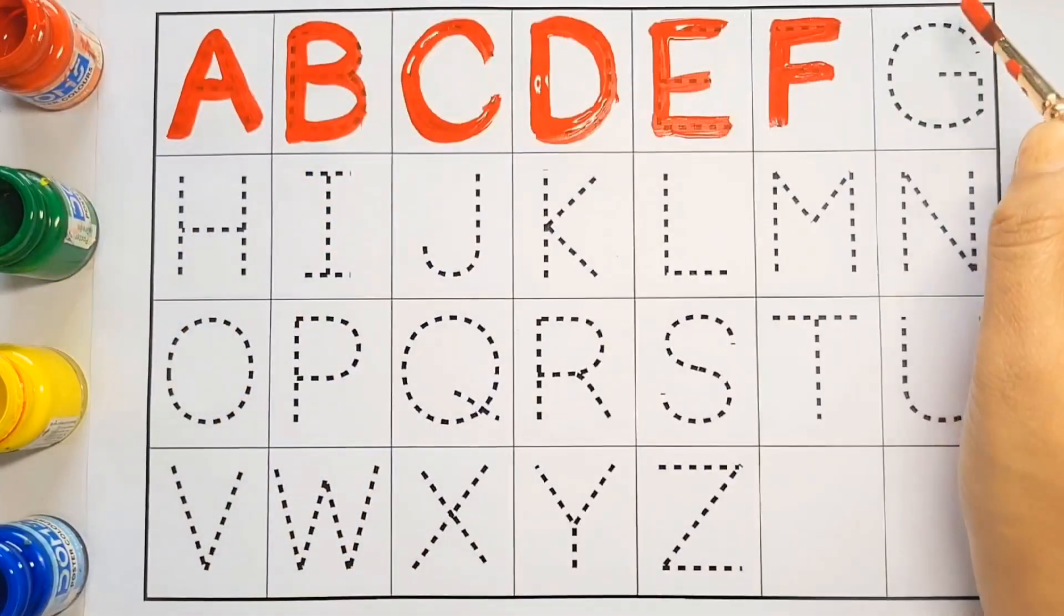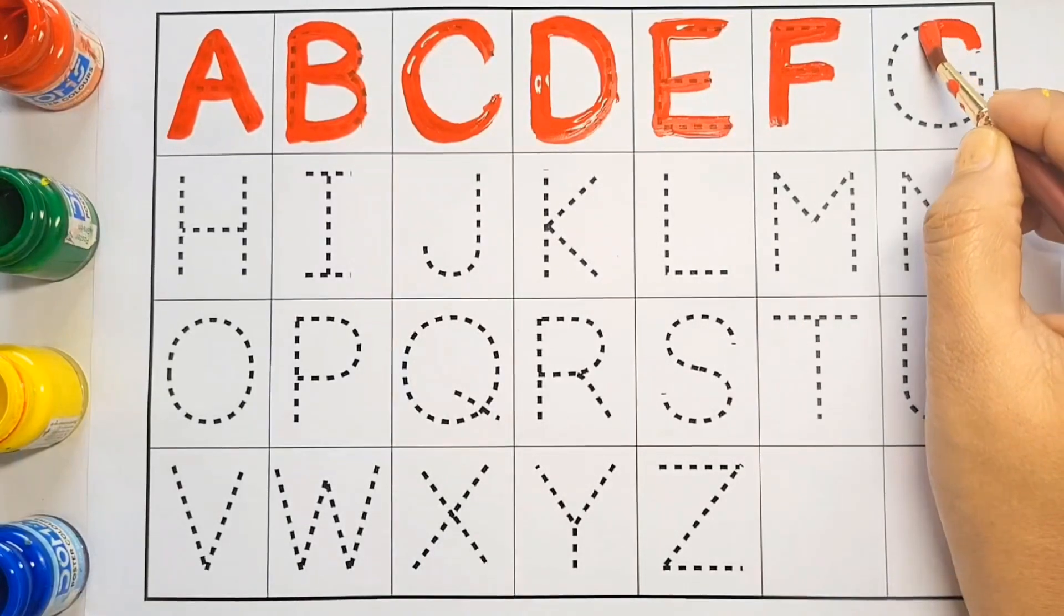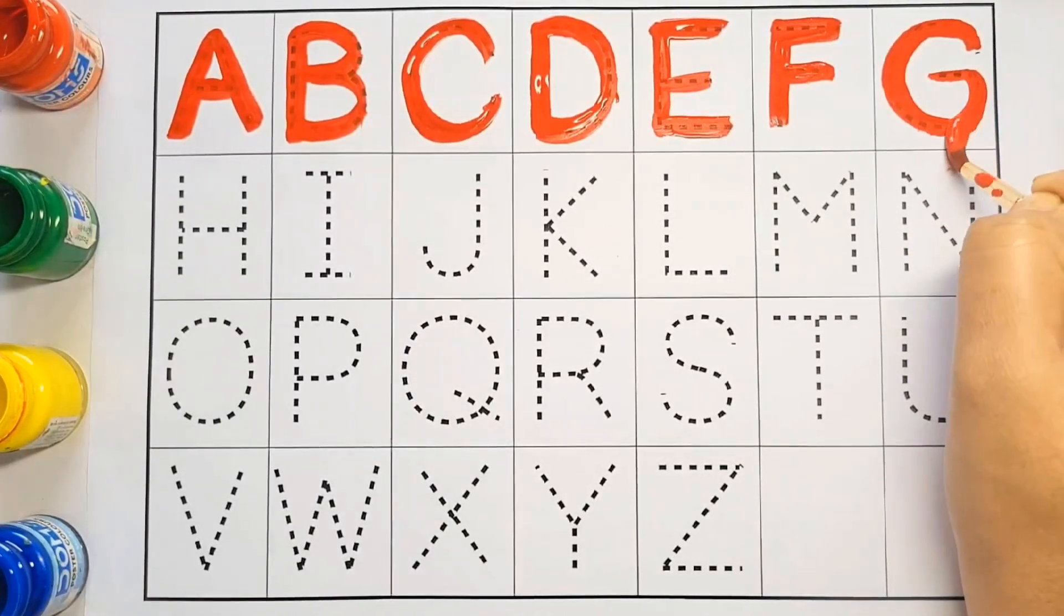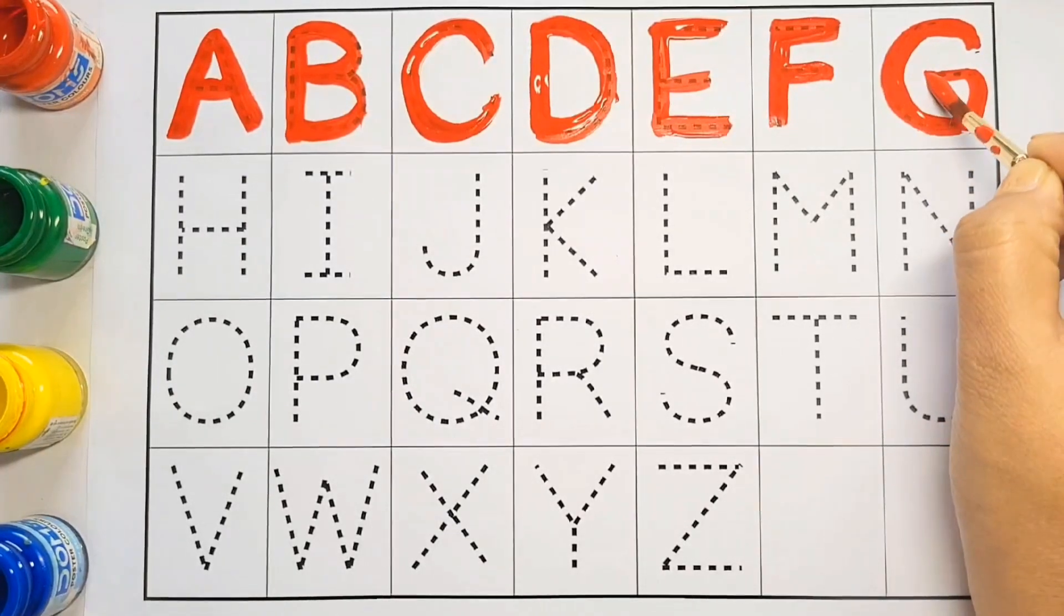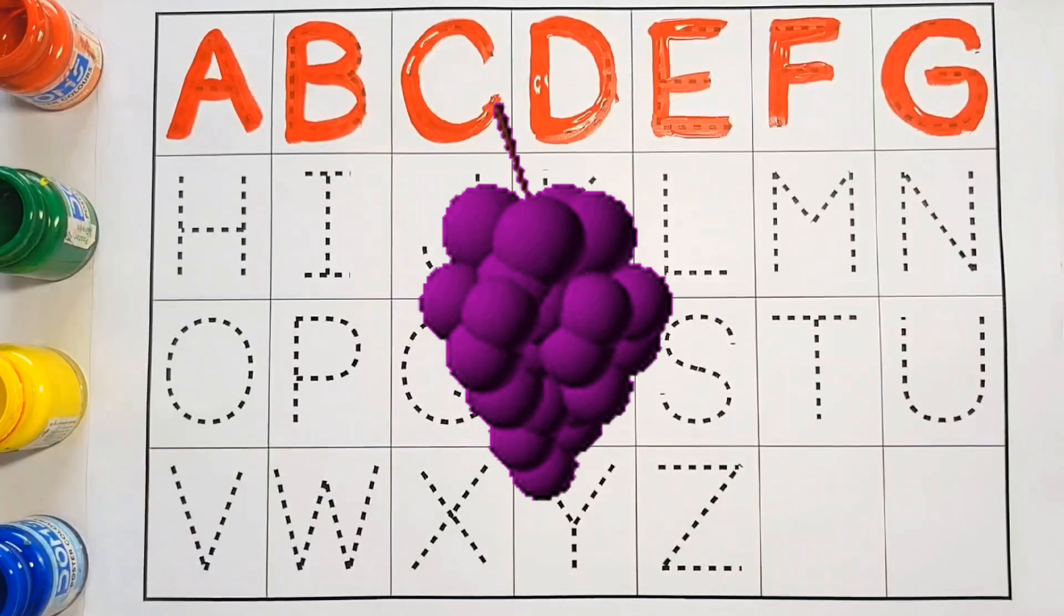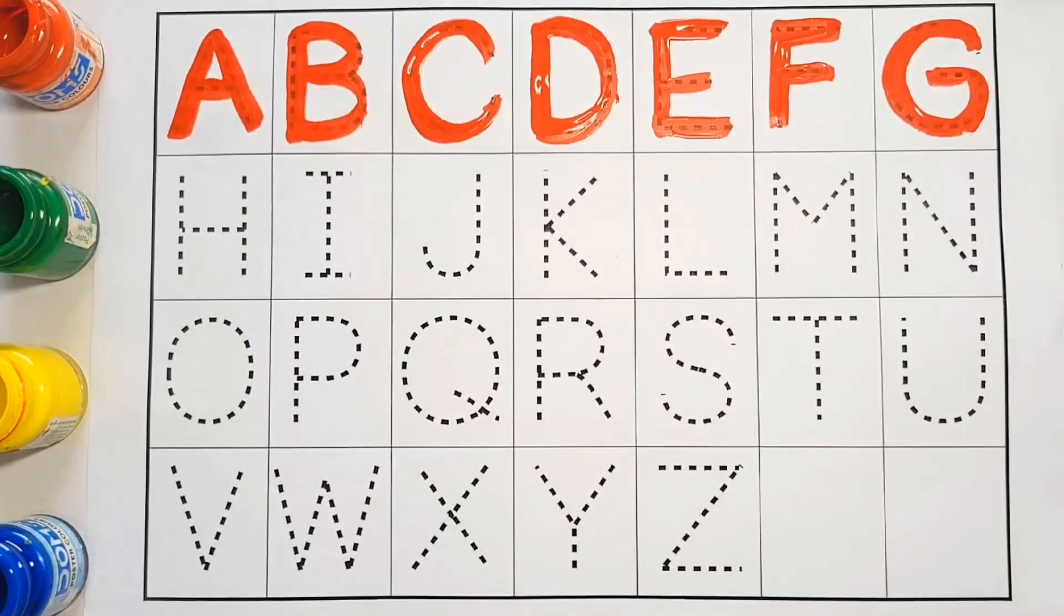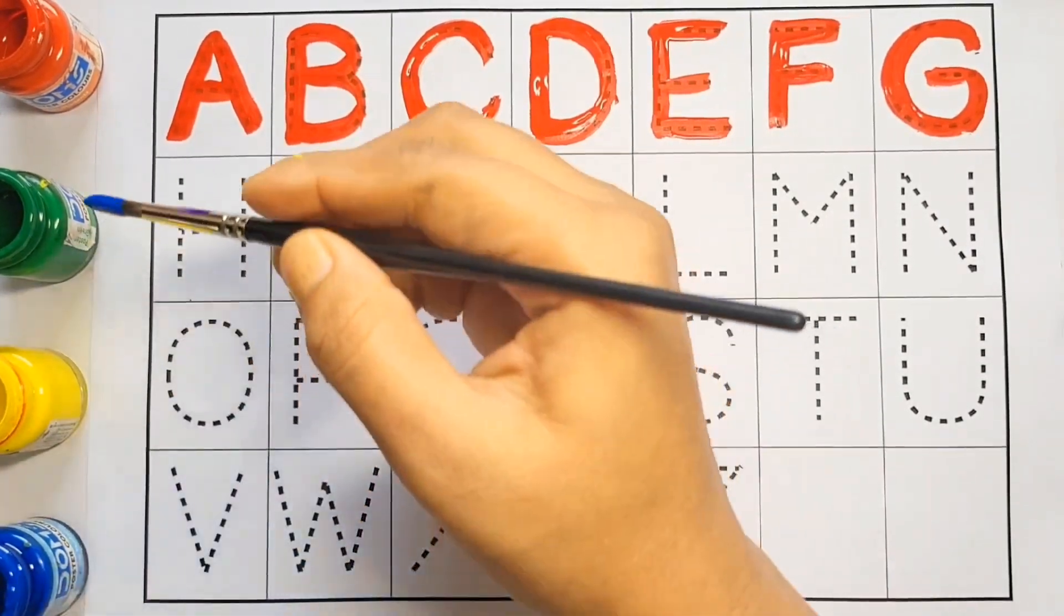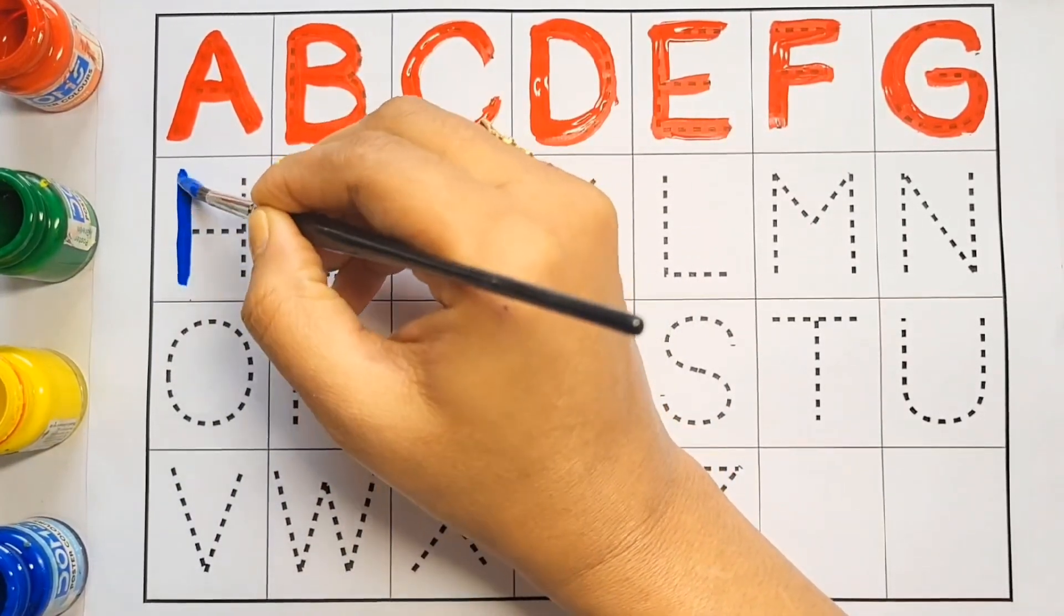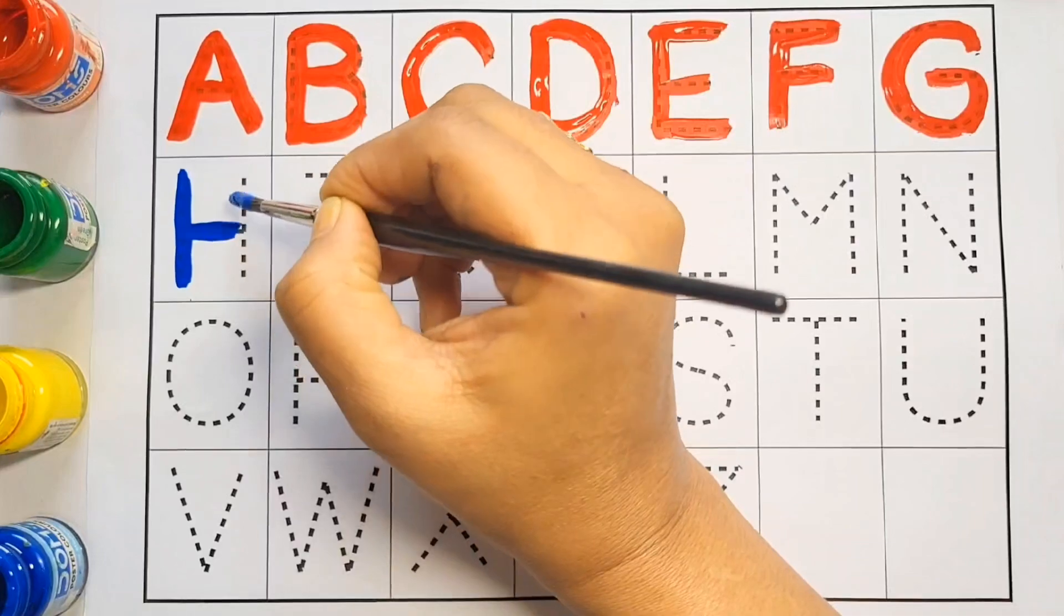G, G for grapes. Next color is blue color. H, H for helicopter.